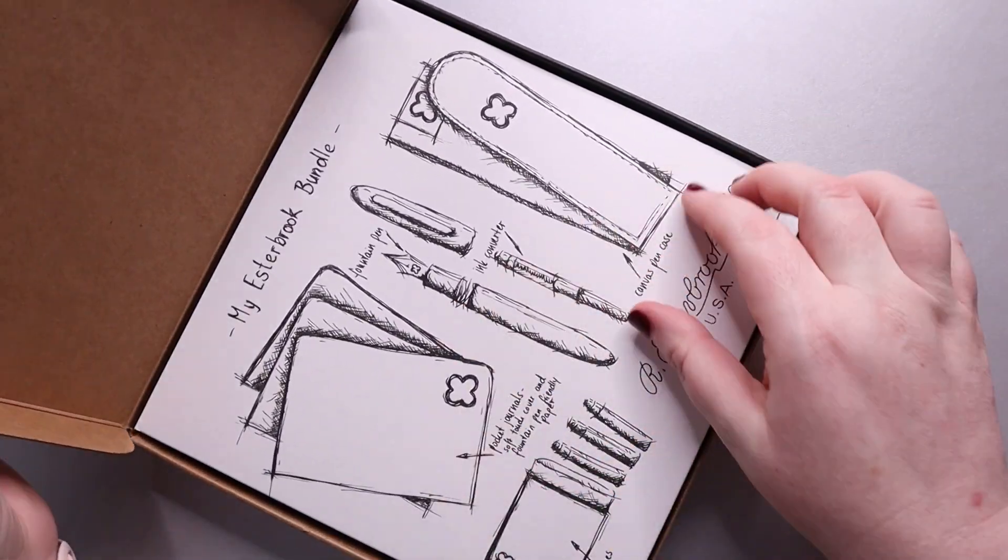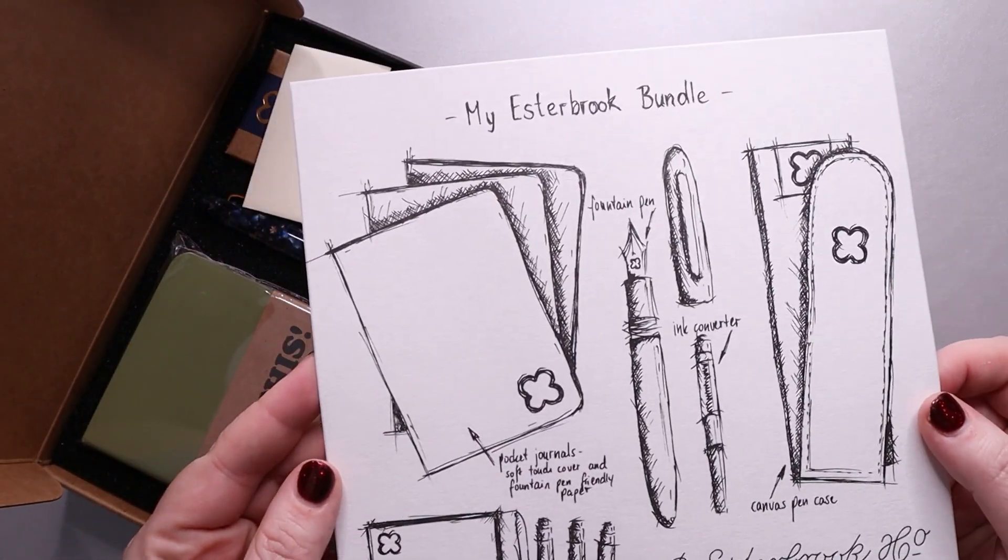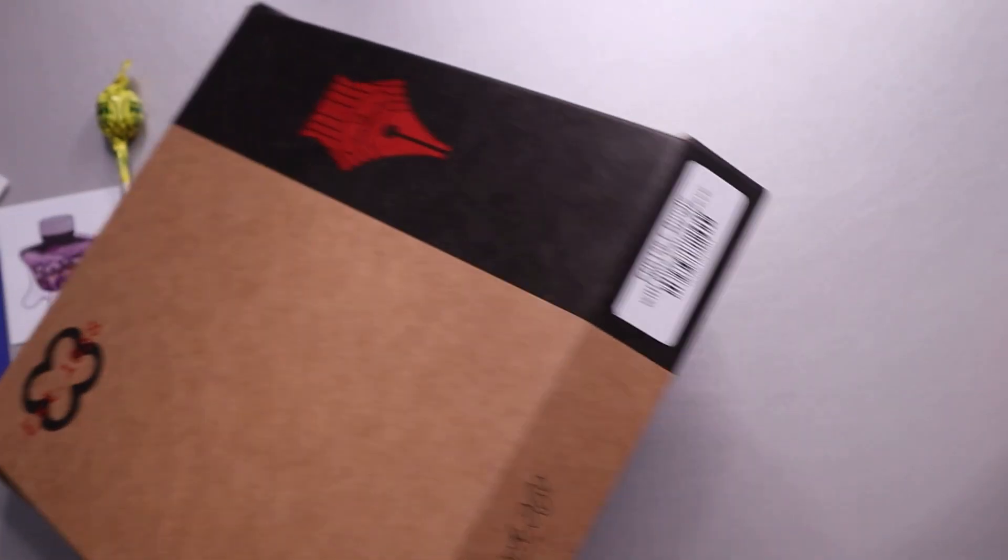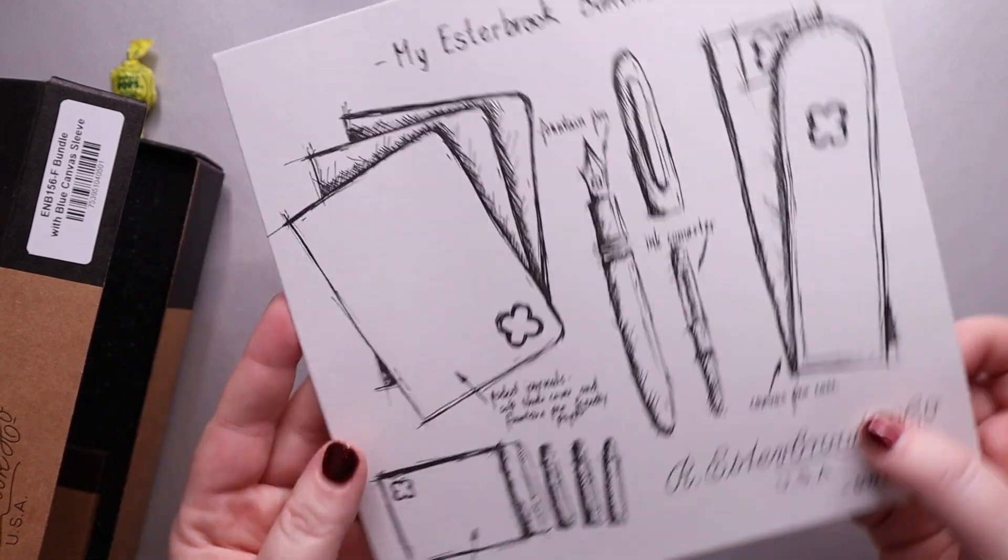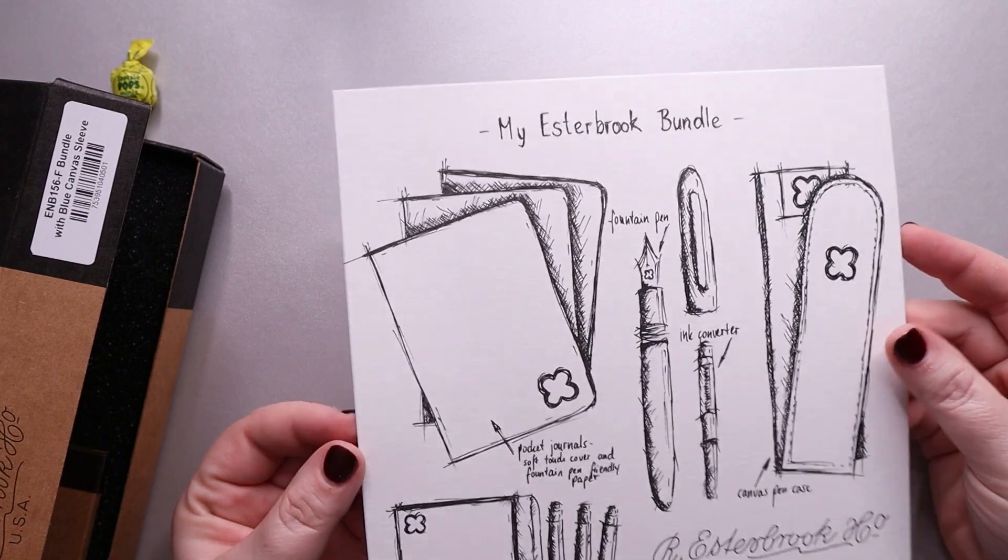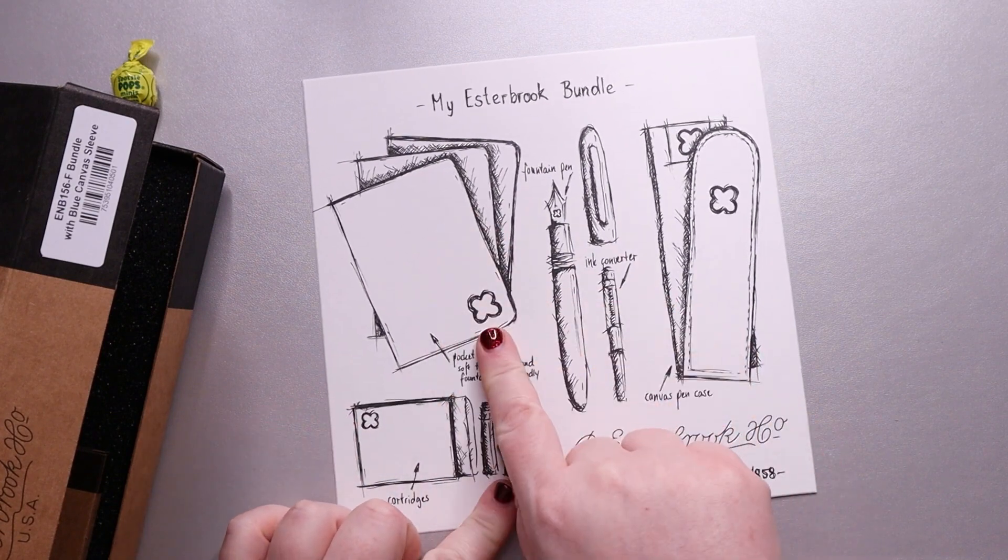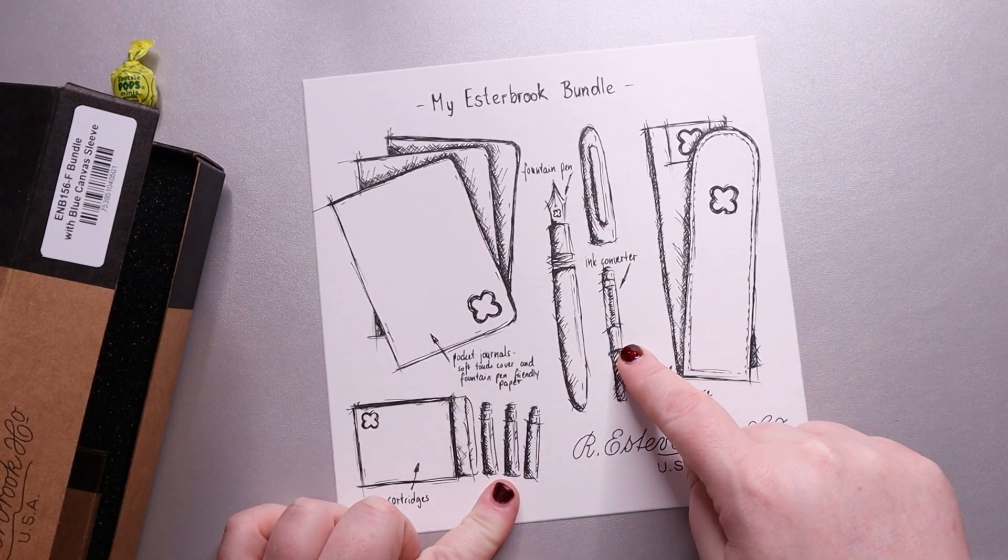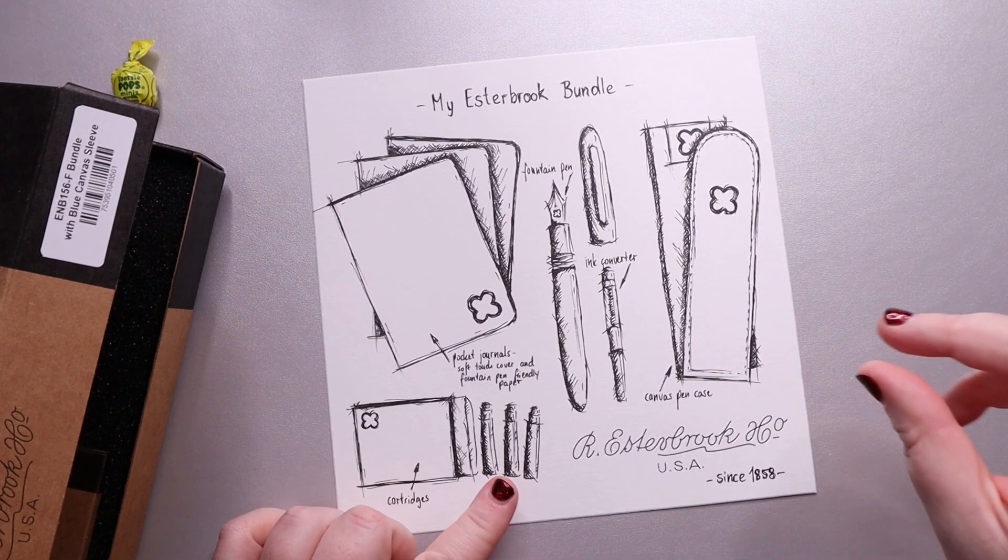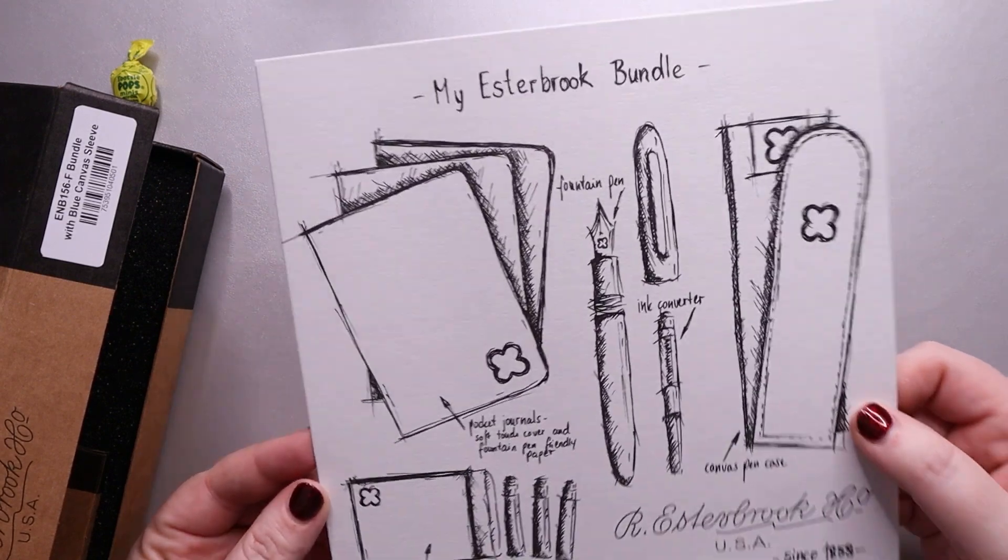So this is the first thing you see. This is actually, even though this is incredibly pretty and everything, this is actually blotter paper. So you can use it as just decoration or you can use it as blotter paper if you want. But it kind of shows you everything that's going to come in here. So we have some journals, we have the fountain pen and the ink converter. There's a little pen case slash sleeve, and then there's some cartridges for the pen. So just to kind of give you an idea.